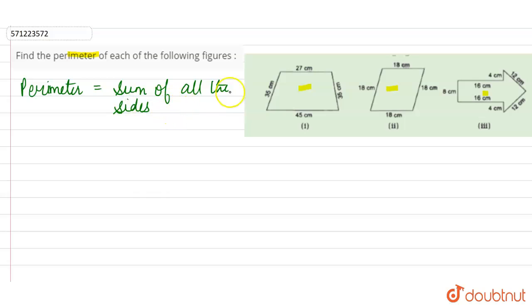So in the first part, we have to add 27 centimeters, 35 centimeters, 45 centimeters, and 36 centimeters. The sum of 27, 35, 45, and 36 centimeters equals 143 centimeters. This is the perimeter of the first figure.